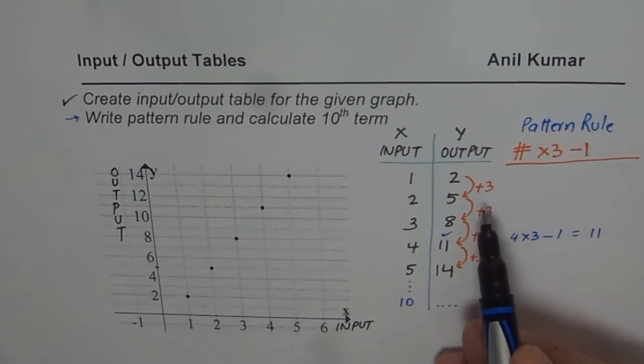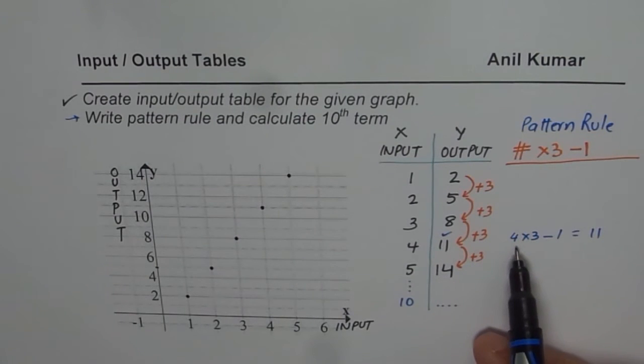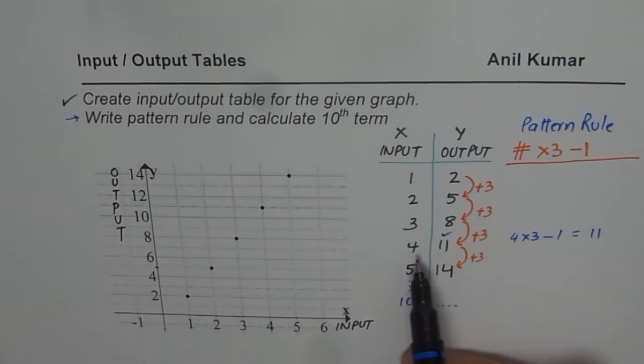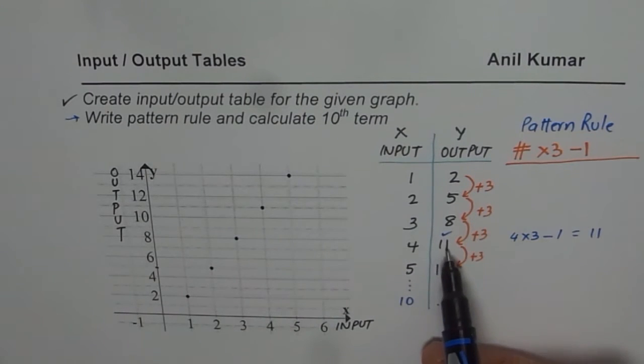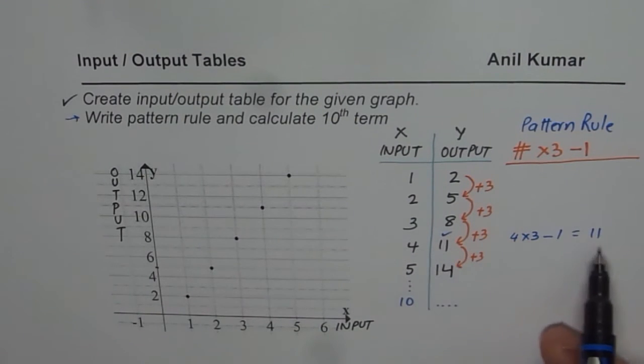So you will see, if your pattern is increasing by the same number each time, then that is how you can get your rule. Multiply the input by that number and see what should be added or subtracted to get the number. So that is my rule.